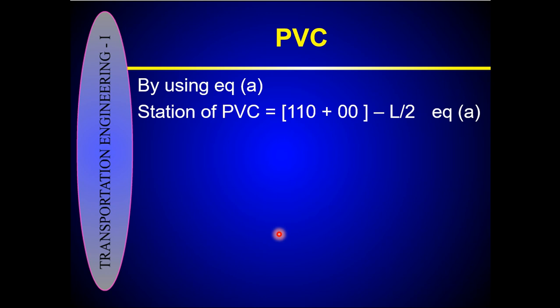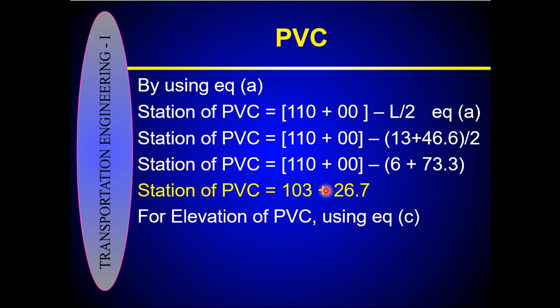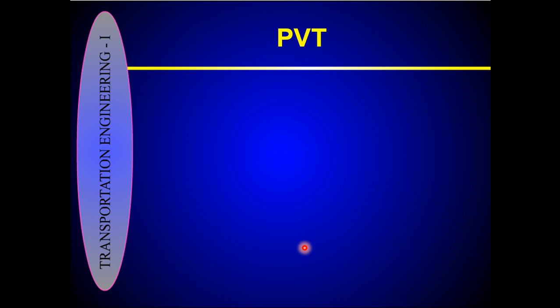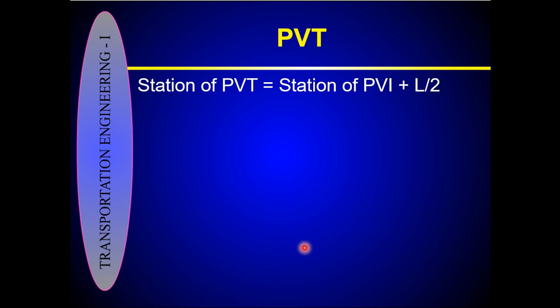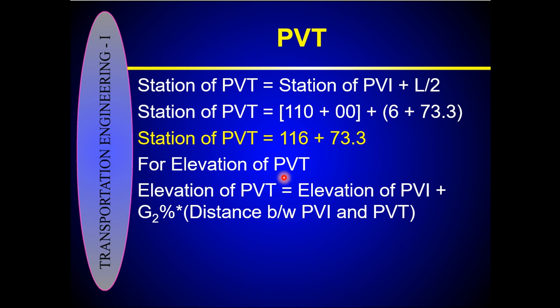Now we can calculate the stationing of the PVC. Using equation A — stationing of PVC = 1110 − L/2 — and substituting L = 13.467, we get the stationing of PVC as 103+26.7. For the elevation of PVC, using equation C with L = 13.467, we get 433.47 feet. For the stationing of the PVT: station of PVI + L/2 = 1110 + 6.733 = station 116+73.3.